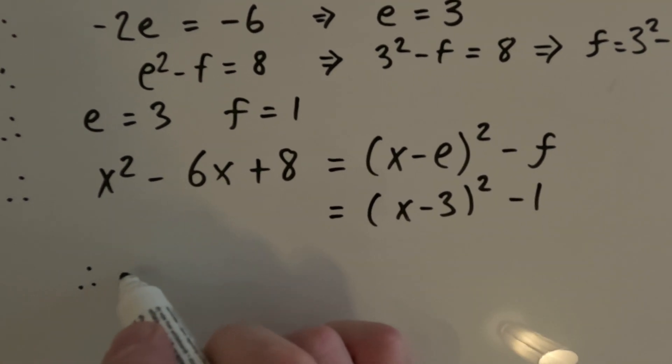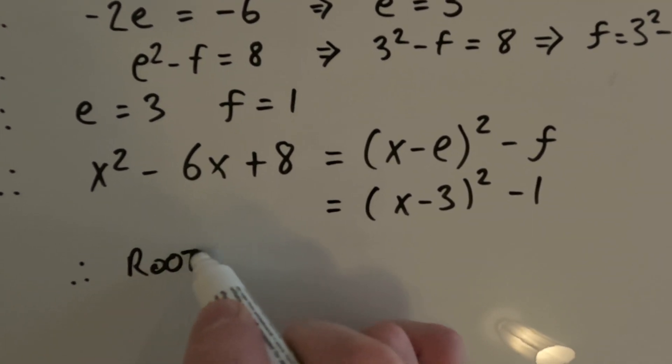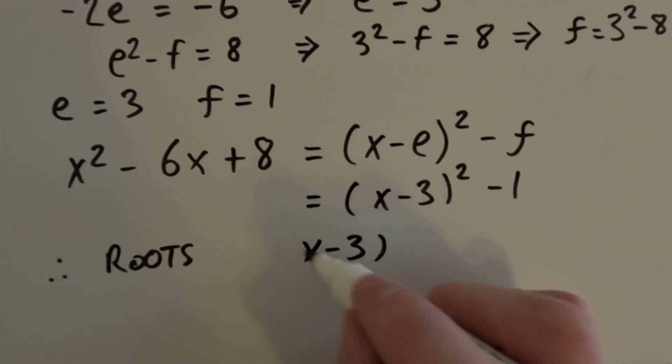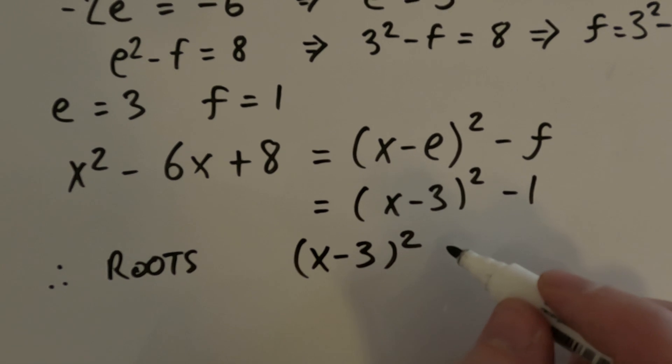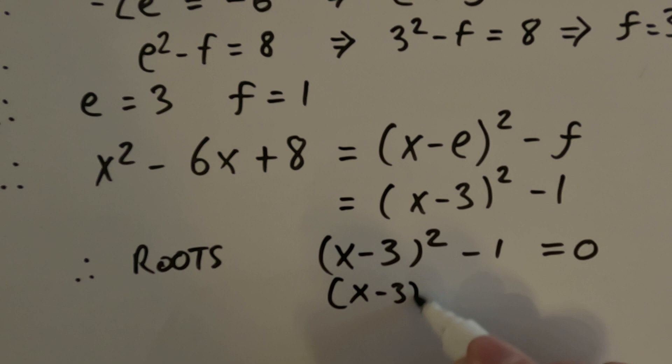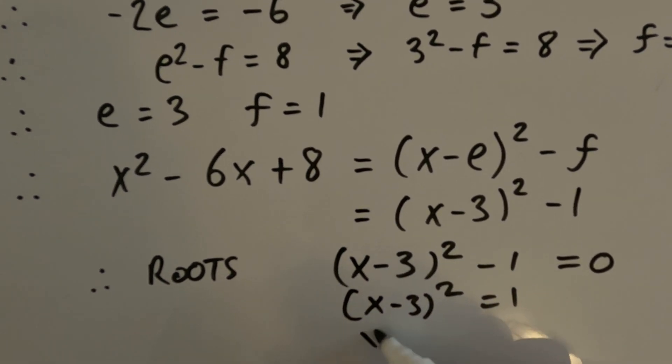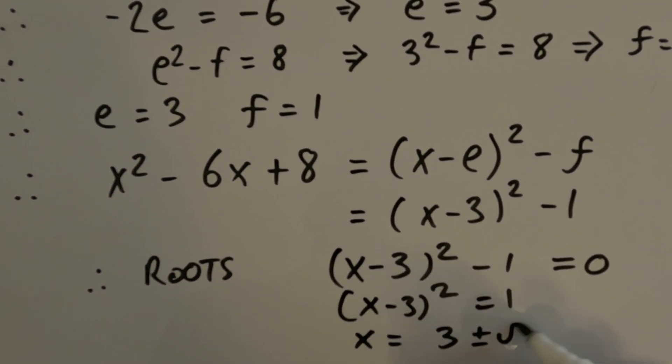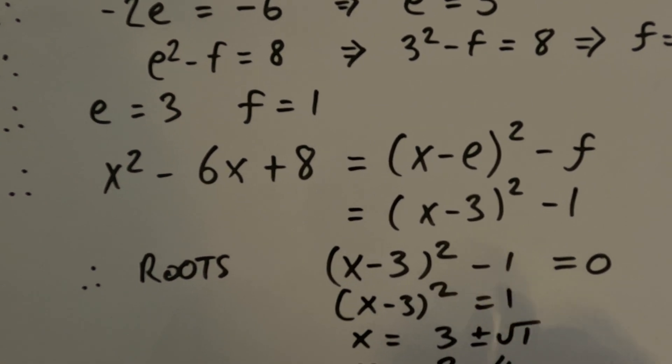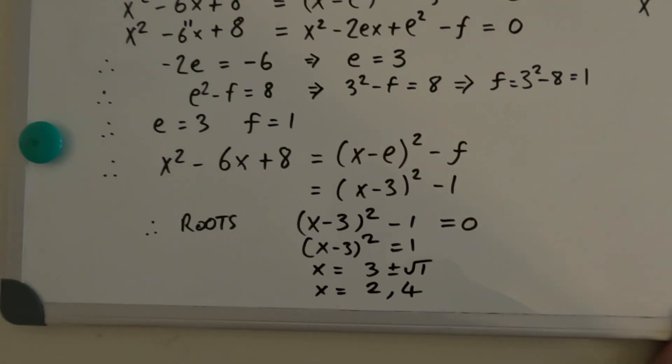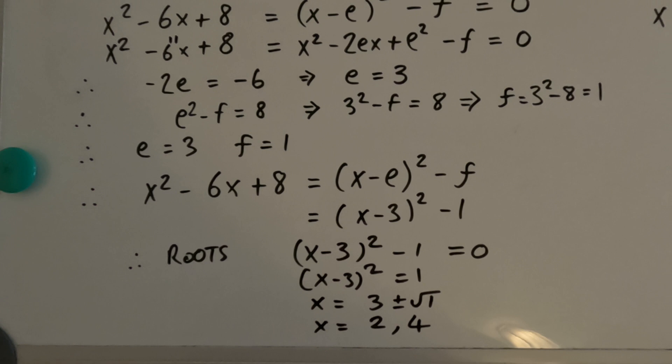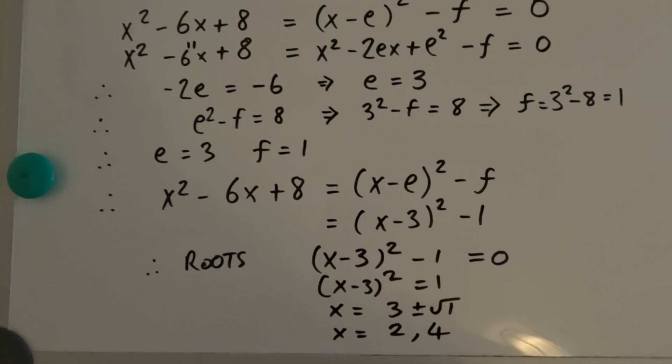then so therefore, x minus 3 all squared minus 1 equals 0, which means x minus 3 all squared equals 1. So x minus 3 equals plus or minus 1. So there's our answer. So x is equal to 2 or 4. So x is equal to 3 plus or minus the square root of 1. So it's equal to 2 or 4.